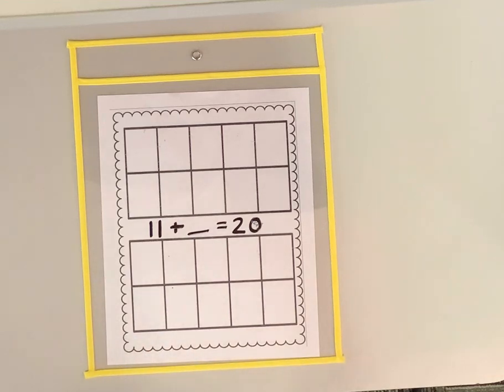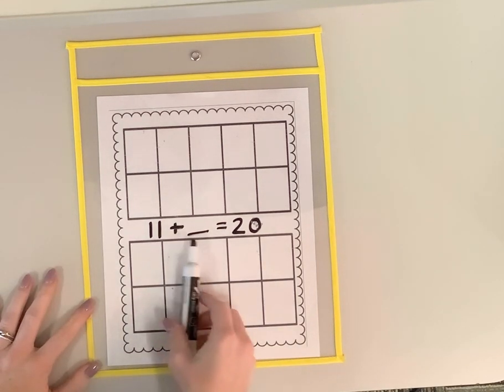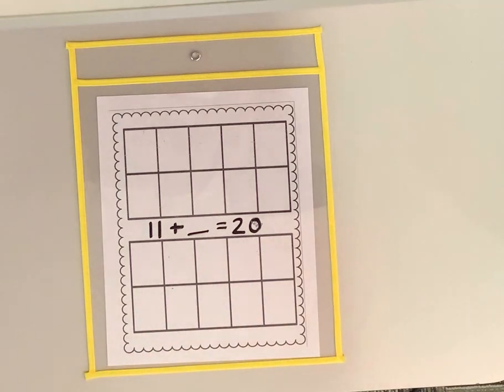Let's look at another example of using our tens frames to solve change unknown addition problems. This problem is 11 plus blank equals 20.